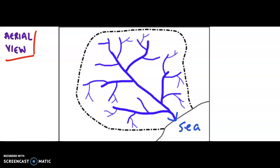We are seeing a dotted line here. This dotted line is referred to as the watershed. It is a border or a boundary, and it encloses a particular region or area. This particular area — associated with the purple lines representing the streams and rivers — is in fact referred to as the drainage basin.